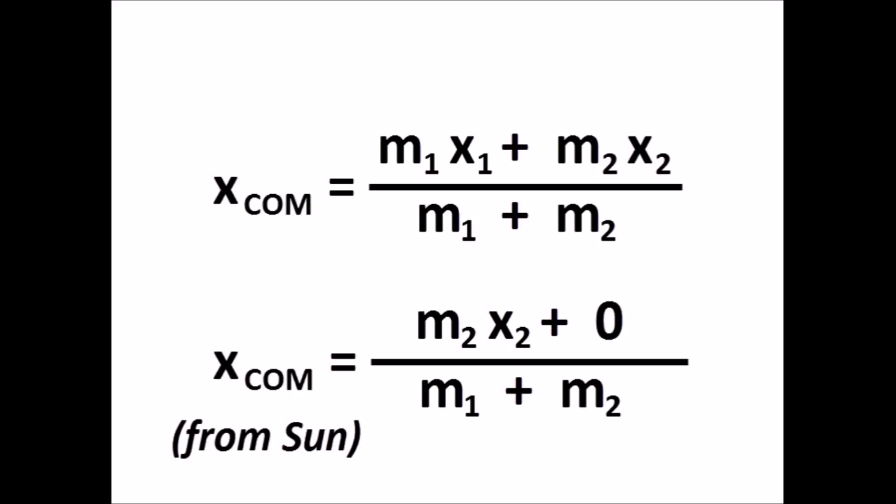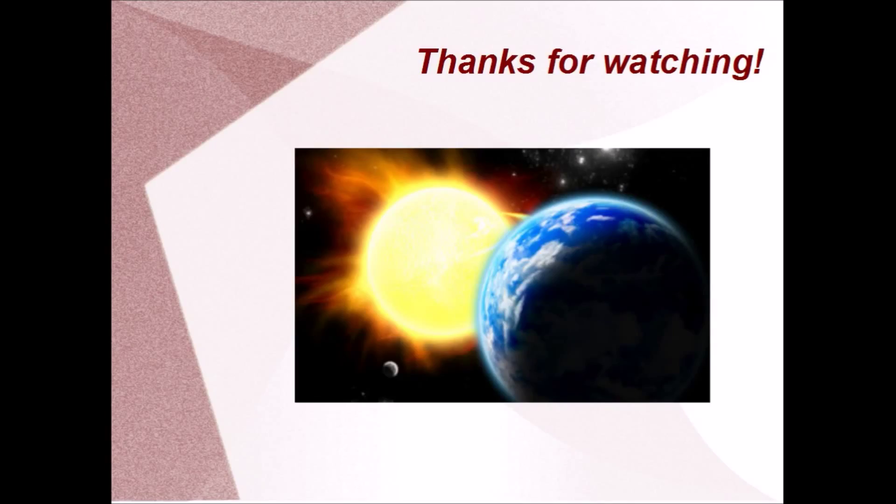So now we just need the masses of the Earth and Sun, and the distance between them, which happens to be 150 million kilometers. What you find is that, because the Sun's mass is so astronomically large, the center of mass is very close to the center of the Sun. Therefore, it's not far off to say we orbit the Sun. That's all for now. Thank you for your attention.